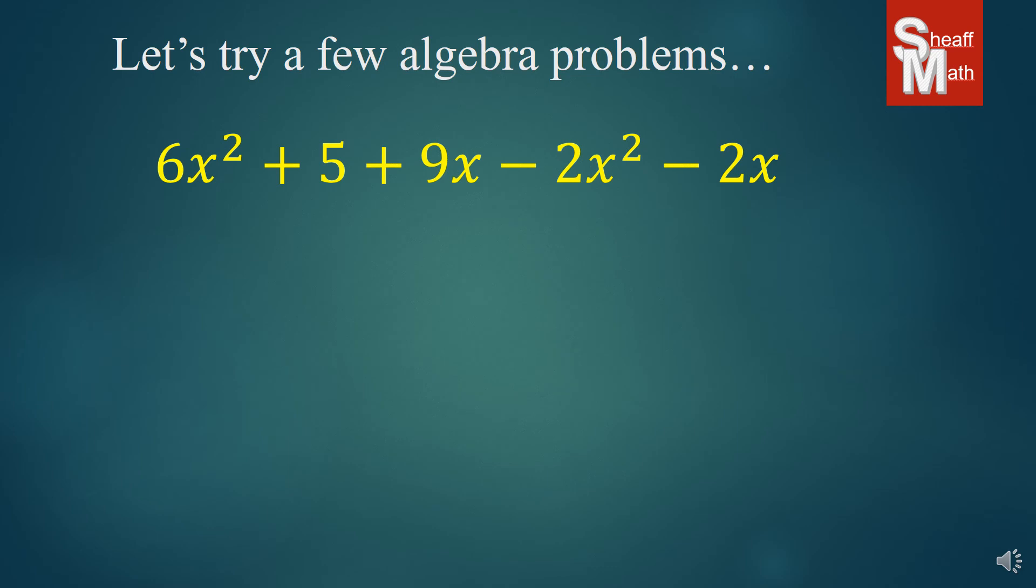Now, sometimes you'll have negatives too. Hopefully you've learned to subtract and add negative integers and whatnot. We have x squareds here, 6 minus 2x squared. And so we've got 4x squared. Then we have the x's, 9, positive 9 and a negative 2x. That makes a positive 7x. And then we have that whole number by himself. And so we just bring him down right there. And we've got our simplified answer.